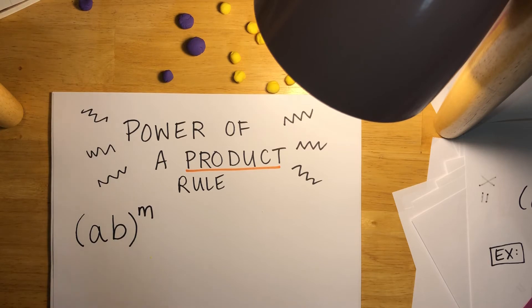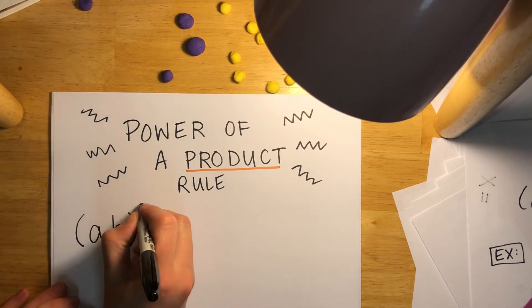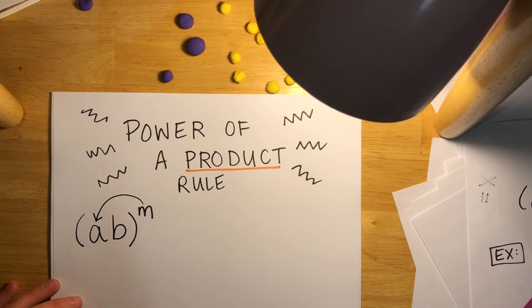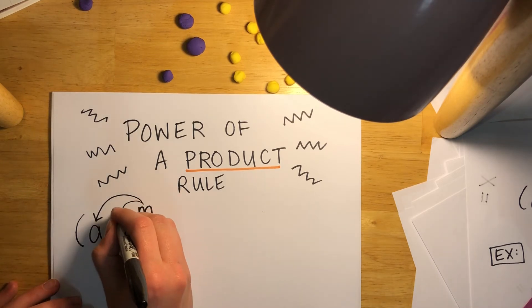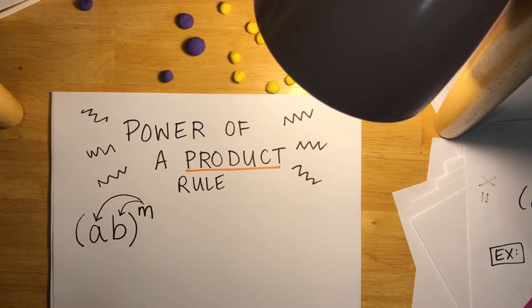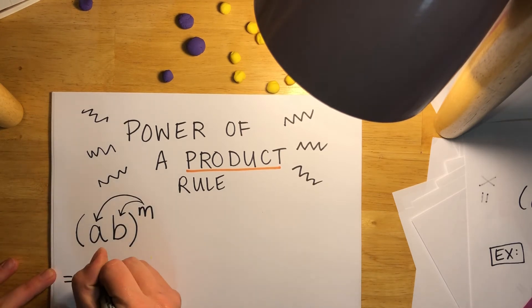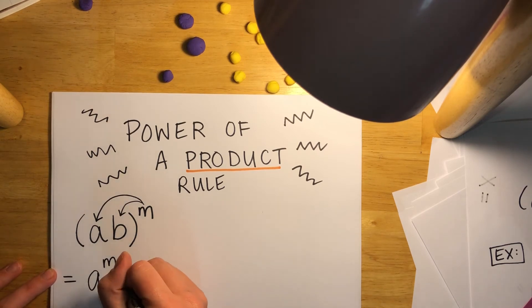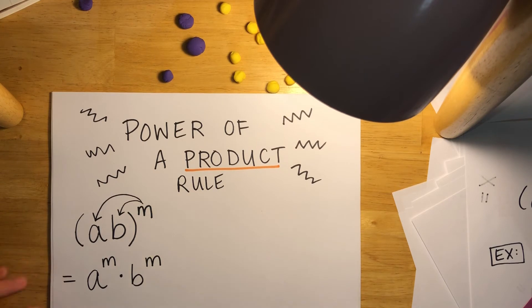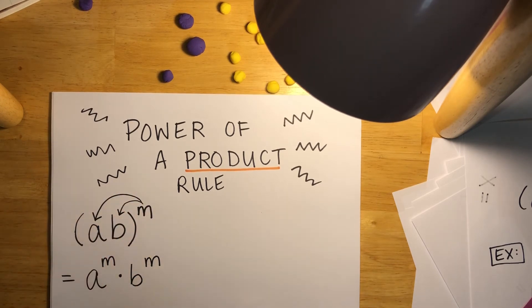The power of a product rule says that this exponent is going to go to a and it's going to go to b. In other words, we can rewrite this as a to the m times b to the power of m. This is the same as this. That exponent m goes to both of those letters on the inside.